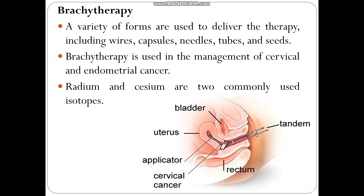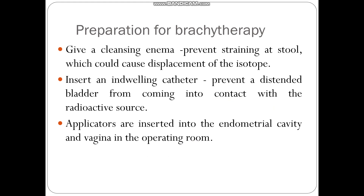Coming to brachytherapy, a variety of forms can be used to deliver the therapy, like wires, capsules, needles, tubes, and seeds. The most commonly used applicator holds the radioactive isotope, and brachytherapy is used in the management of cervical as well as endometrial cancer. Here we will be using radium as well as cesium as isotopes.